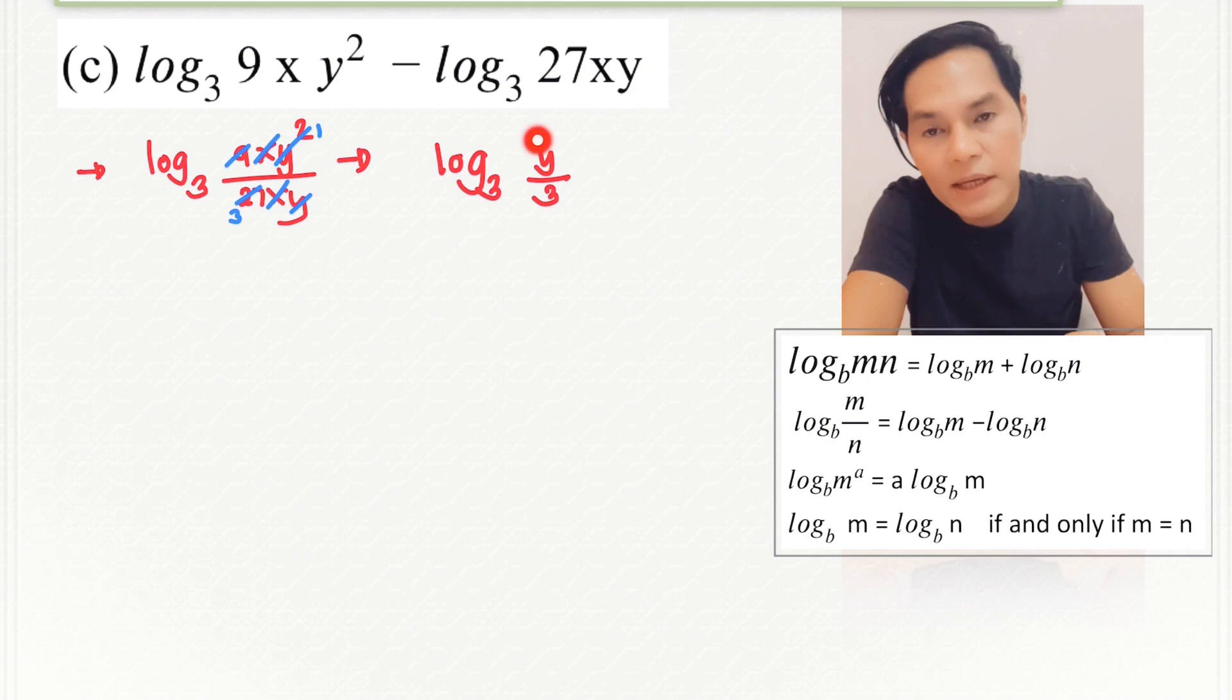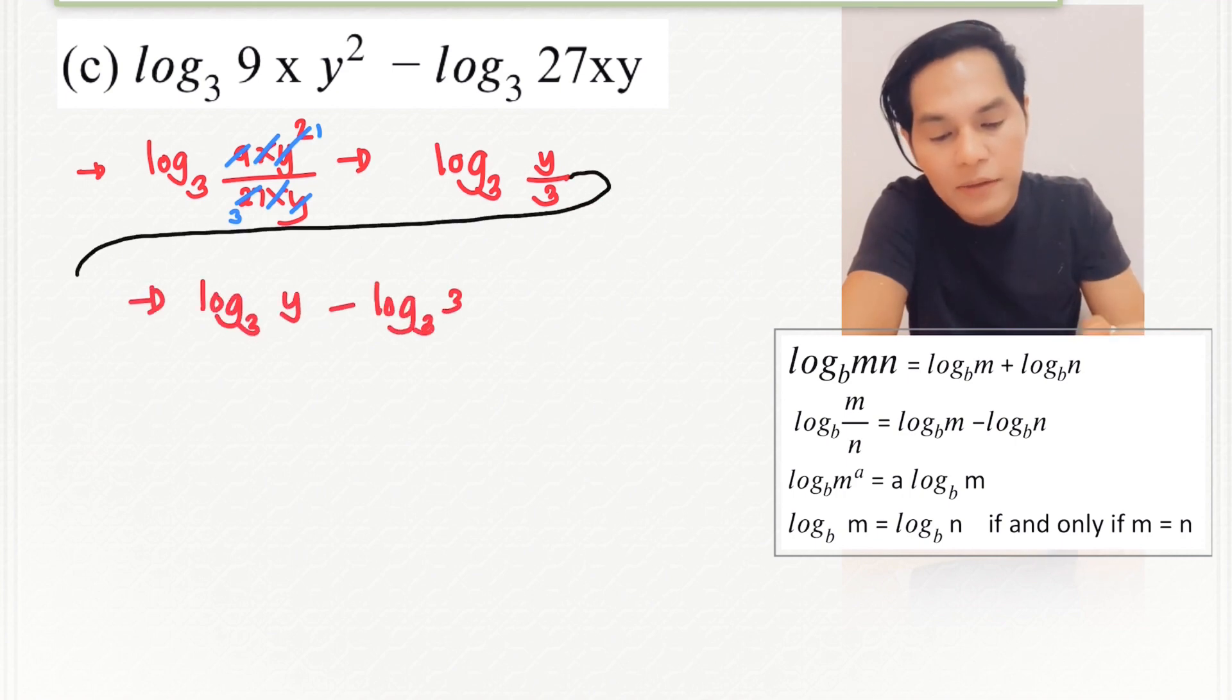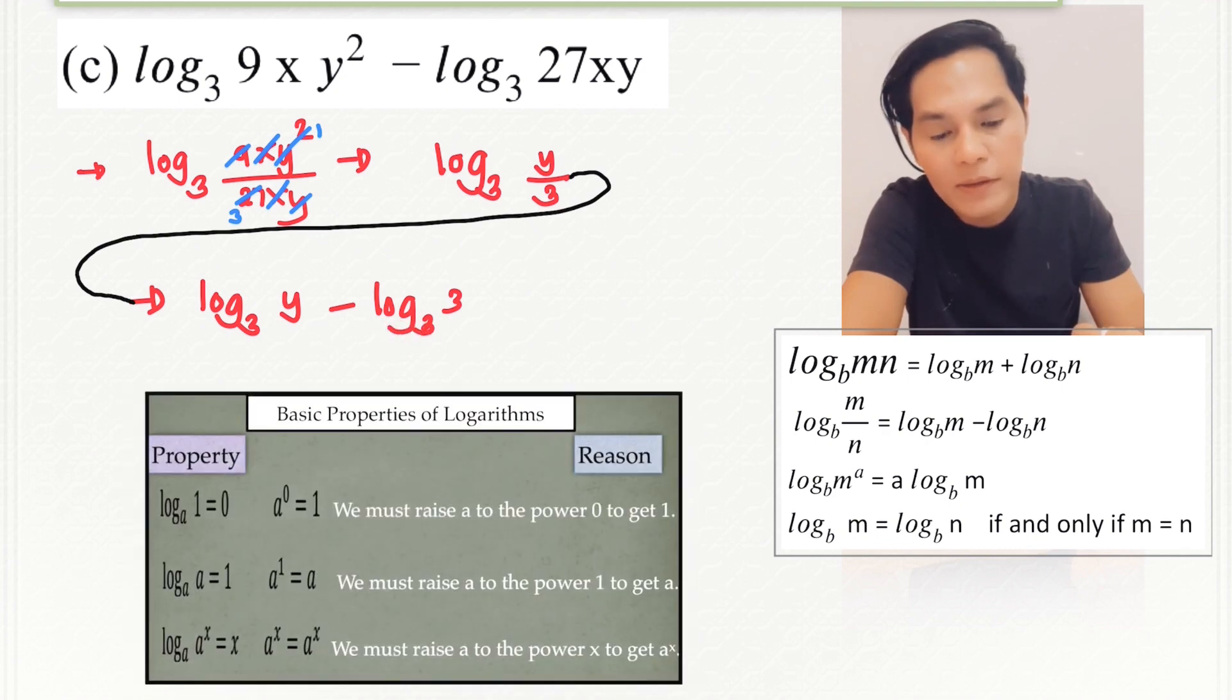But as you can see, there is an expression here that we can simplify. So I separated them again. You have the log of y to the base 3 minus the log of 3 to the base 3. And take note that this one, the log of 3 to the base 3 in the basic property, that is equal to 1. That's why our final answer here is the log of y to the base 3 minus 1.